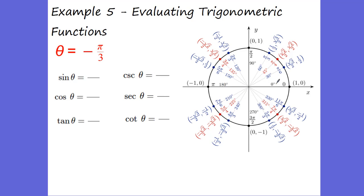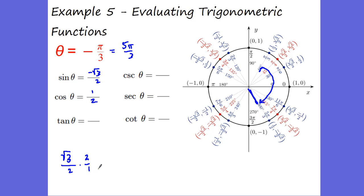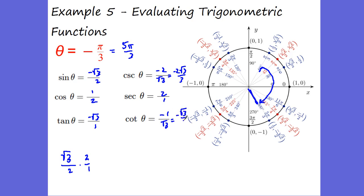What if our angle is negative pi over three? Positive pi over three goes this way, so negative pi over three goes the other way — which means this angle is really five pi over three, right here in quadrant four. Sine is negative root three over two. Cosine is one-half. Tangent is negative root three over two divided by one-half, multiplied by the reciprocal, giving negative root three. Cosecant: flip the sine — negative two over root three — rationalize to get negative two root three over three. Secant: flip cosine — two over one equals two. Cotangent: flip tangent — negative one over root three — rationalize to get negative root three over three.